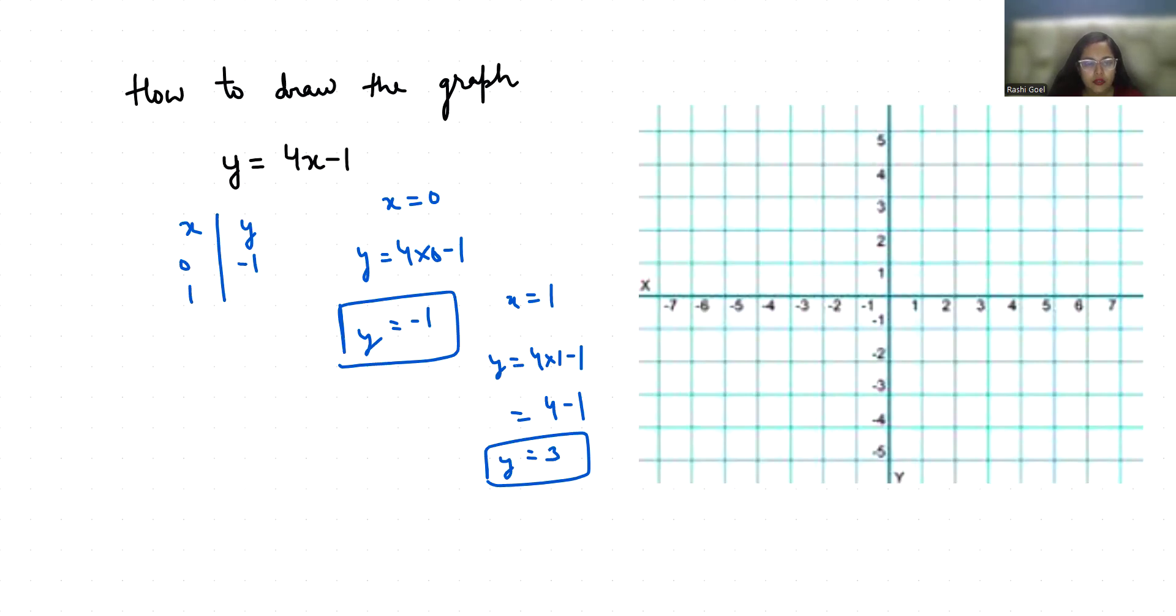Now suppose x is minus 1, y = 4 times minus 1 minus 1, y = minus 5.